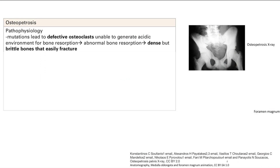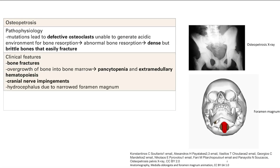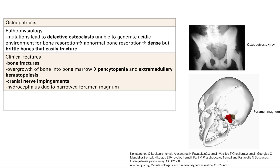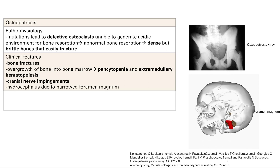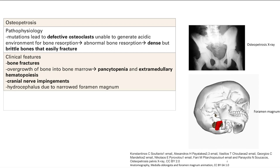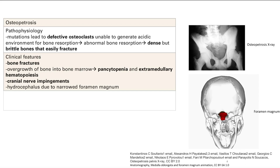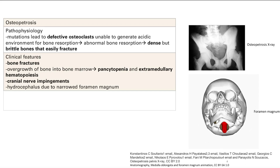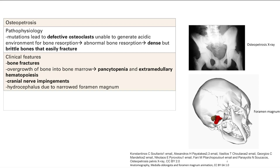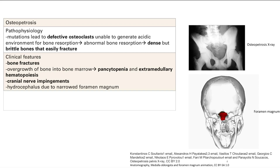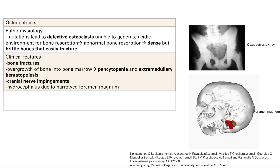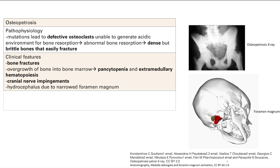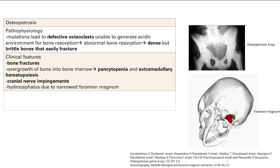Clinical features of this disease include easy bone fractures. You're going to get overgrowth of the bone into bone marrow, so you're going to get pancytopenia. Pancytopenia means all those blood products are low, so you have poor red blood cells, poor platelets, and poor white blood cell production.